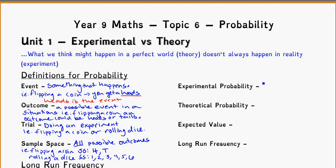Experimental probability is what happens in the real world. This is what happens in the real world. And basically, this is with randomness, that things are not always exactly as we expect them to be.